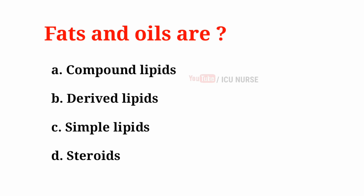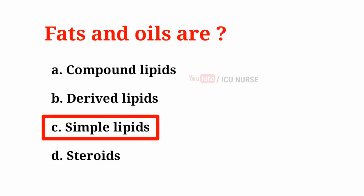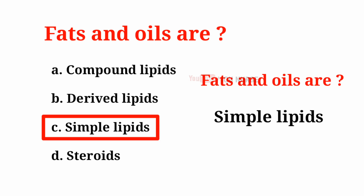Fats and oils are: A. Compound lipids, B. Derived lipids, C. Simple lipids, D. Steroids. And the correct answer is C. Simple lipids. Fats and oils are simple lipids.